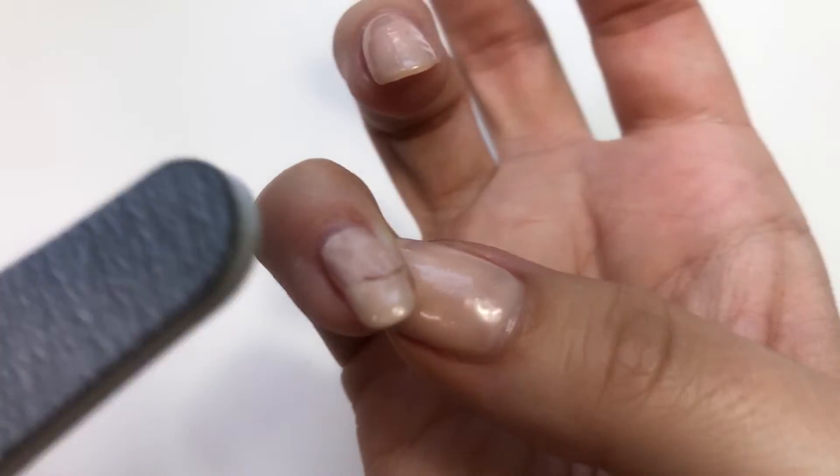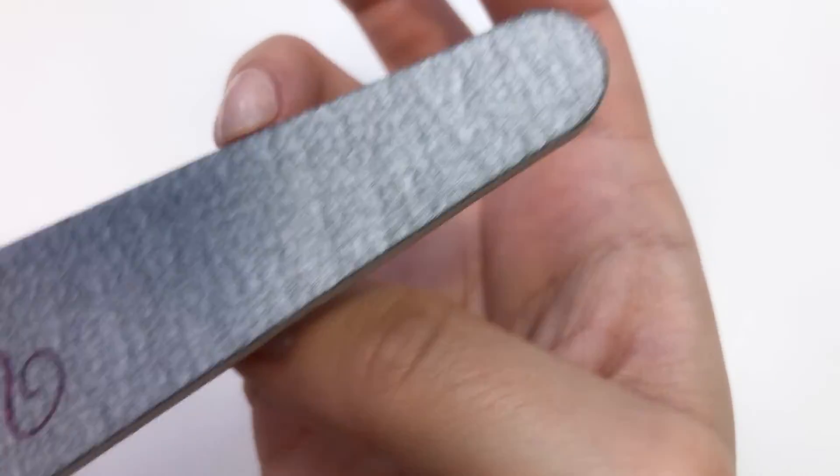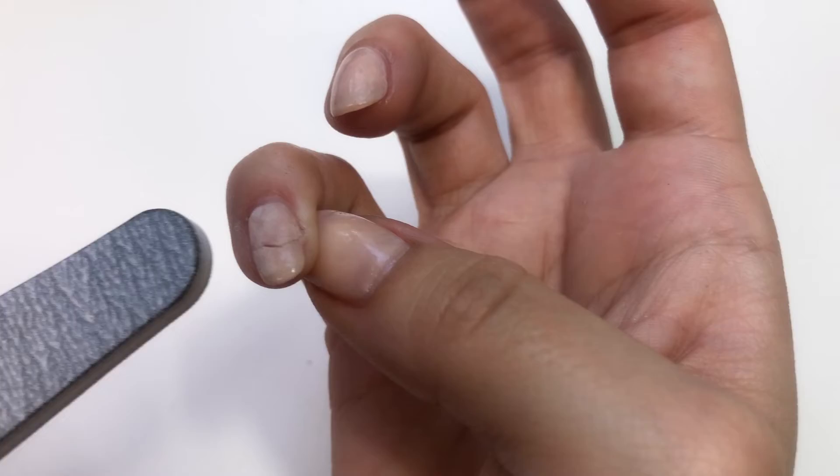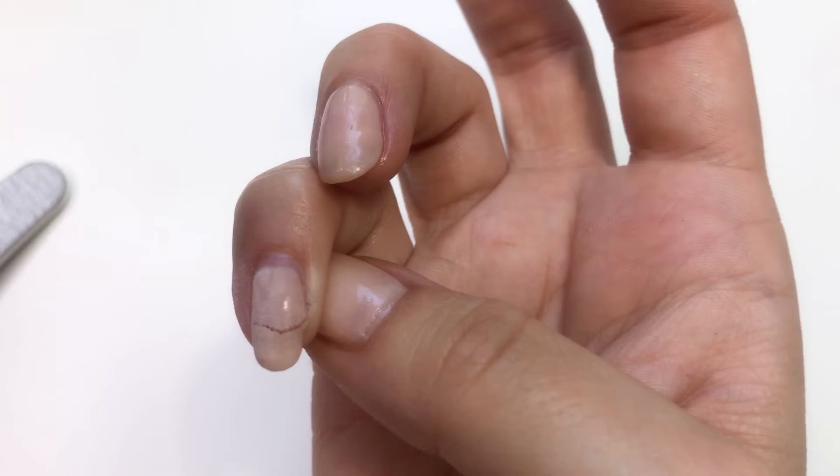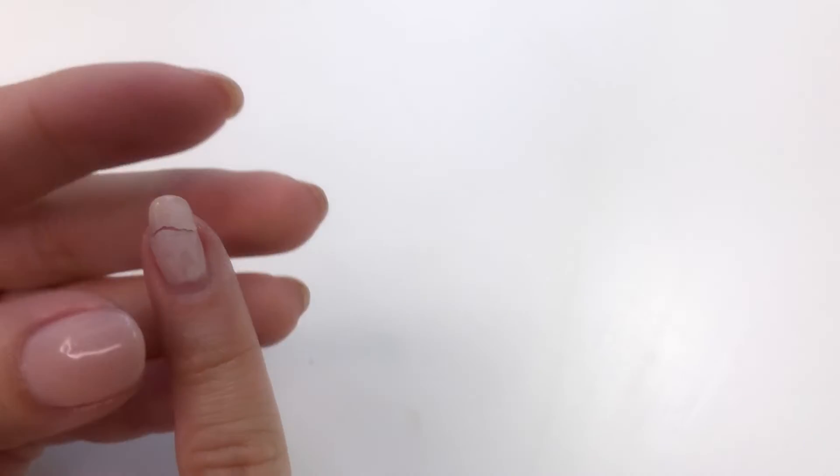When filing you can start at the cuticle area as it's gonna be easier and then move on to the broken bit. Just be careful to file in the direction of the break rather than the opposite direction because you don't want to completely break your nail.